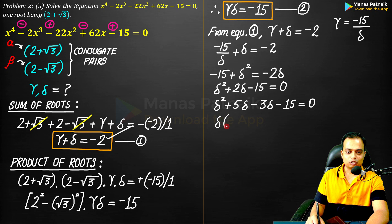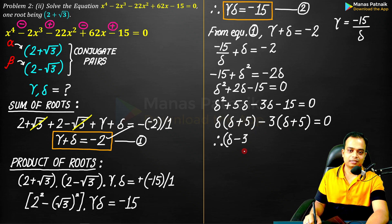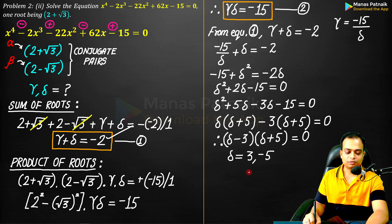5δ - 3δ will become 2δ. Then take δ as common. And here you can take -3 as common. Whatever remains, again you can take δ + 5 as common. δ + 5 and δ - 3. These are the factors. So δ = 3, -5.